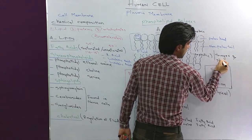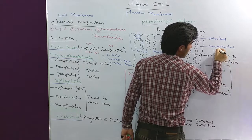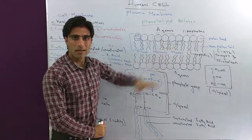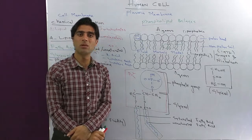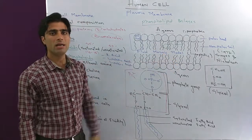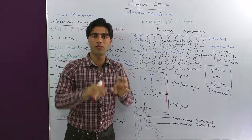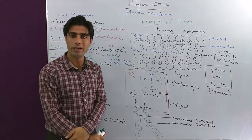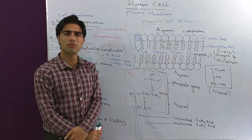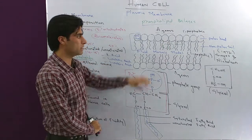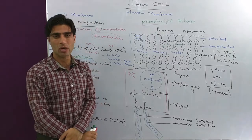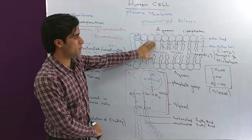Singer and Nicolson proposed in 1972 that biological membranes are made up of a phospholipid bilayer — the fluid mosaic model. It has a certain degree of flexibility and fluidity, allows some chemical substances through while restricting others, and demonstrates all the characteristics of biological membranes we have studied in previous videos.